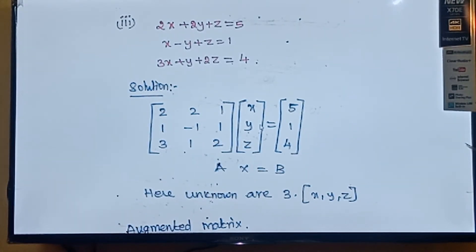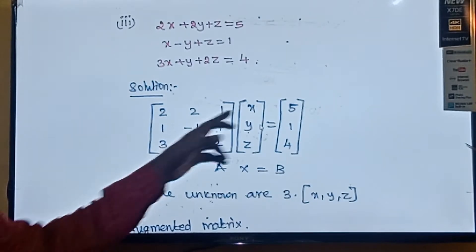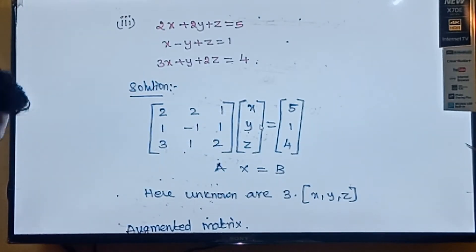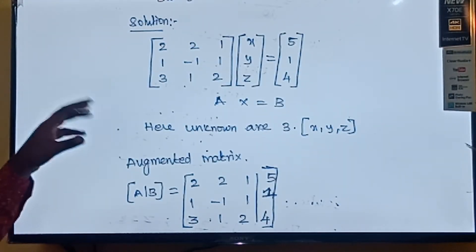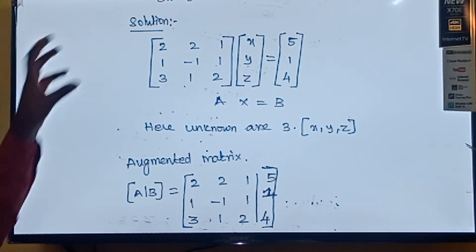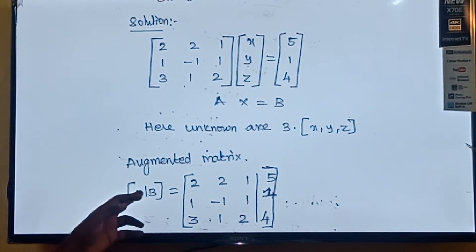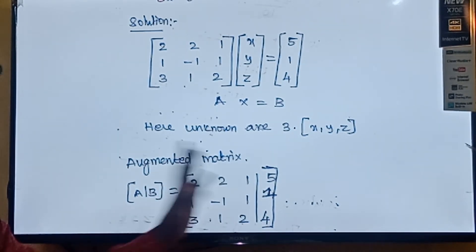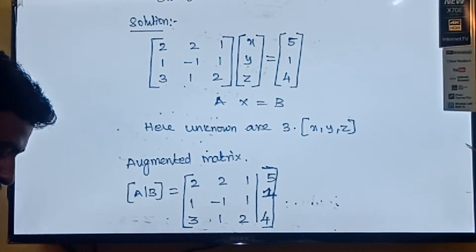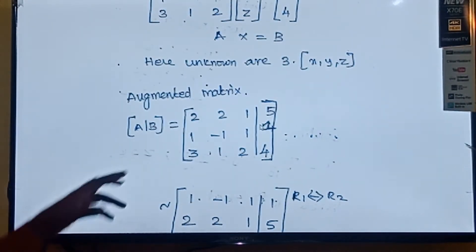Now the augmented matrix — the augmented matrix is nothing but the combining of A and B. So the augmented matrix [A|B] is equal to the A matrix and the B matrix written together. I have written it here. Next, we already have the theorem.